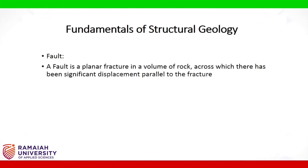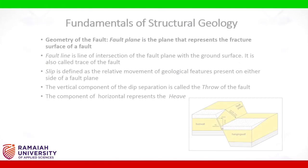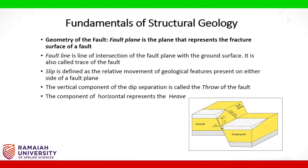A fault is a planar fracture in a volume of rock across which there has been significant displacement parallel to the fracture. Fault plane is the plane that represents the fracture surface of a fault. Fault line is the line of intersection of the fault plane with the ground surface, also called the trace of the fault. Slip is the relative movement of geological features on either side of a fault plane. The vertical component of the dip separation is called the throw of the fault, and the horizontal component represents the heave.